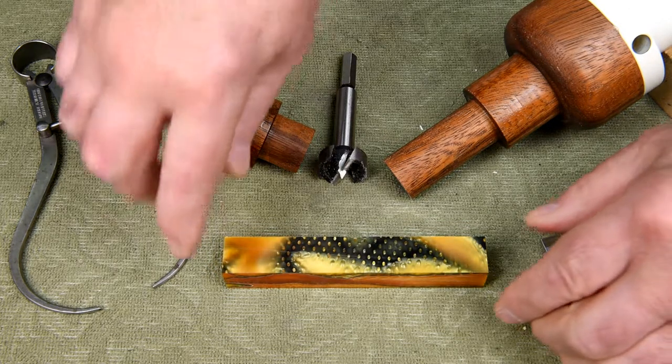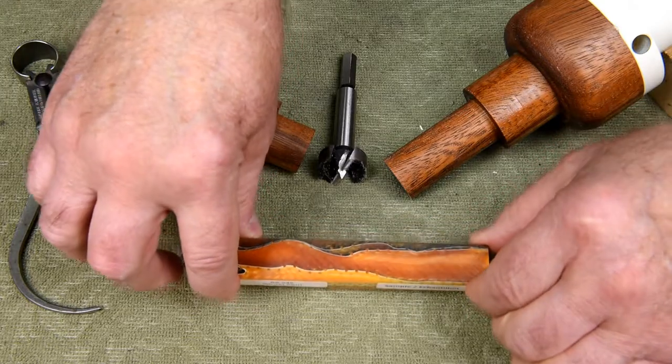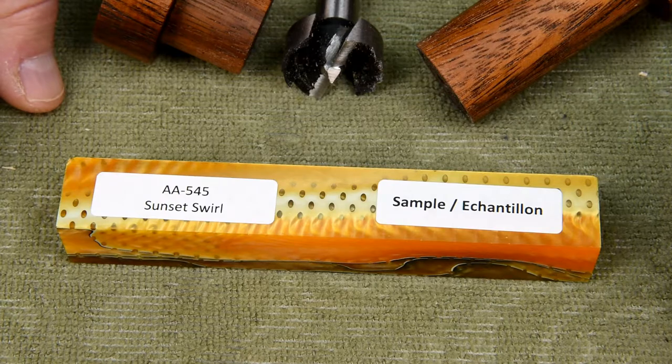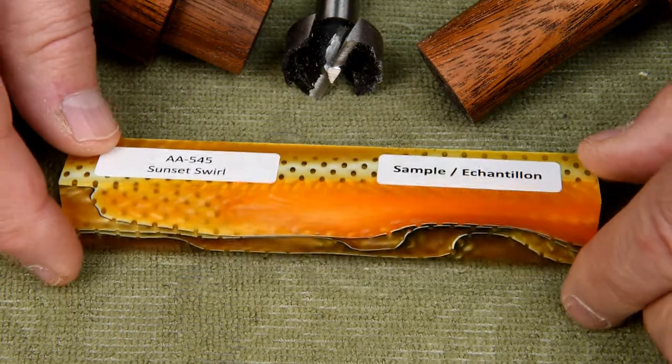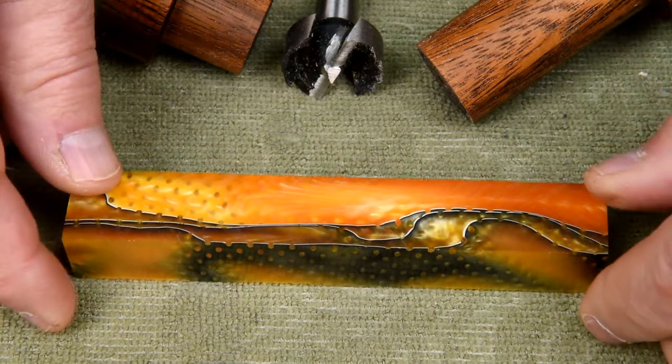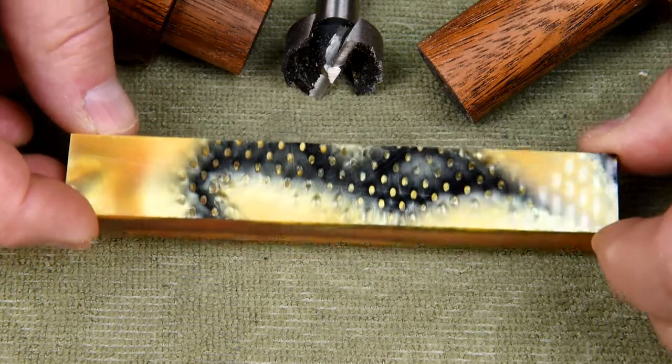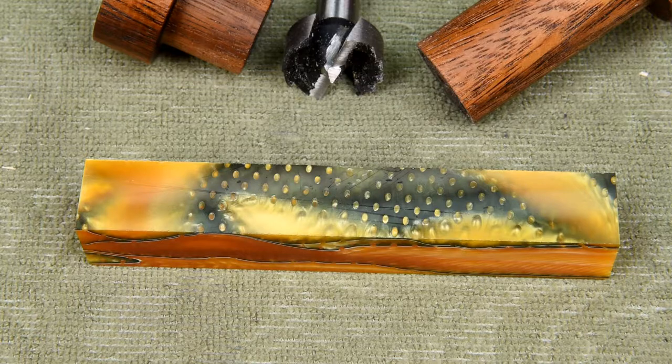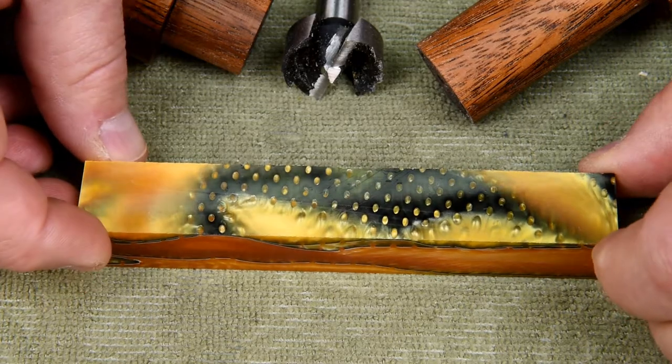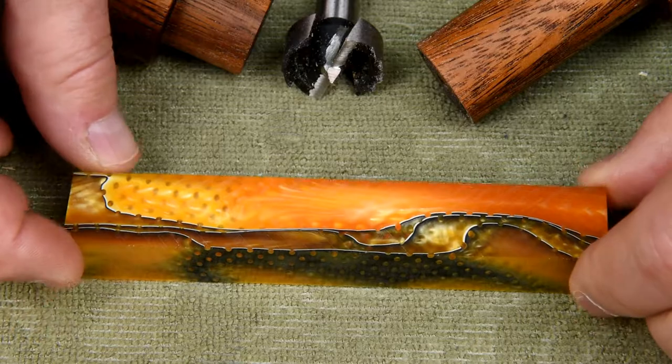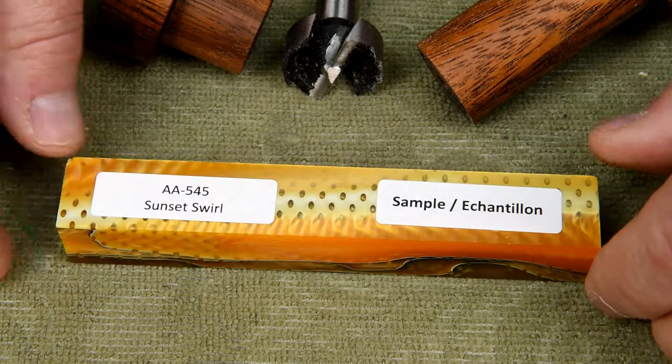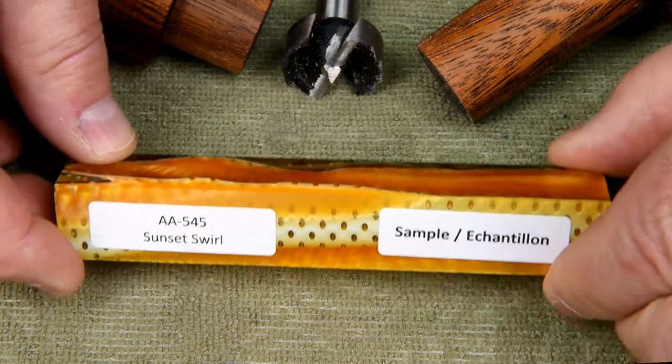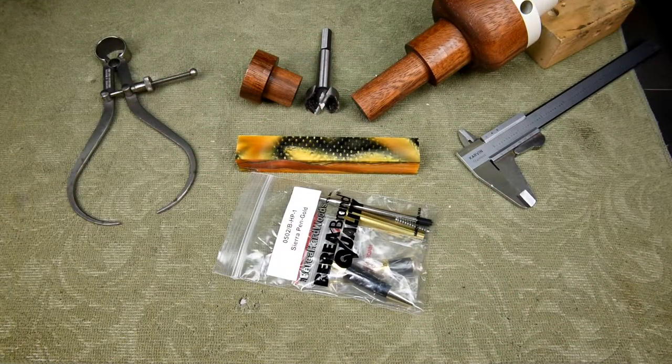The free sample that I got in my last order is called Sunset Swirl, but I think they should have named it fish skin. I've been thinking about this blank and I'm really anxious to see what it's going to look like after it's turned down. So this video is going to be almost entirely about the blank, not about the pen.